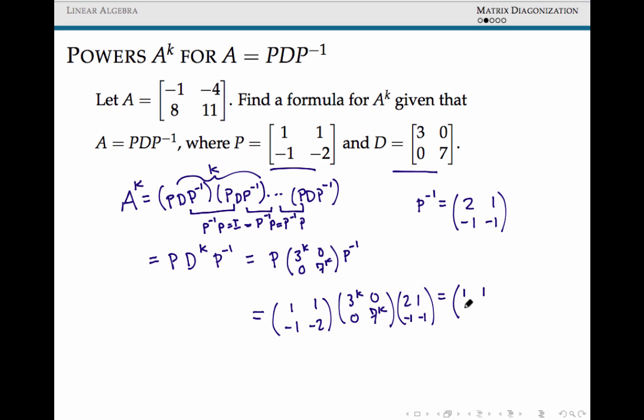We're going to get, it's 3 to the k times 2 plus 0 times negative 1, so this is 2 times 3 to the k. It's 3 to the k times 1 here, so this is just 3 to the k, 0 times 2 plus negative 1 times 7 to the k, and negative 7 to the k here. So there's our first part of our product.